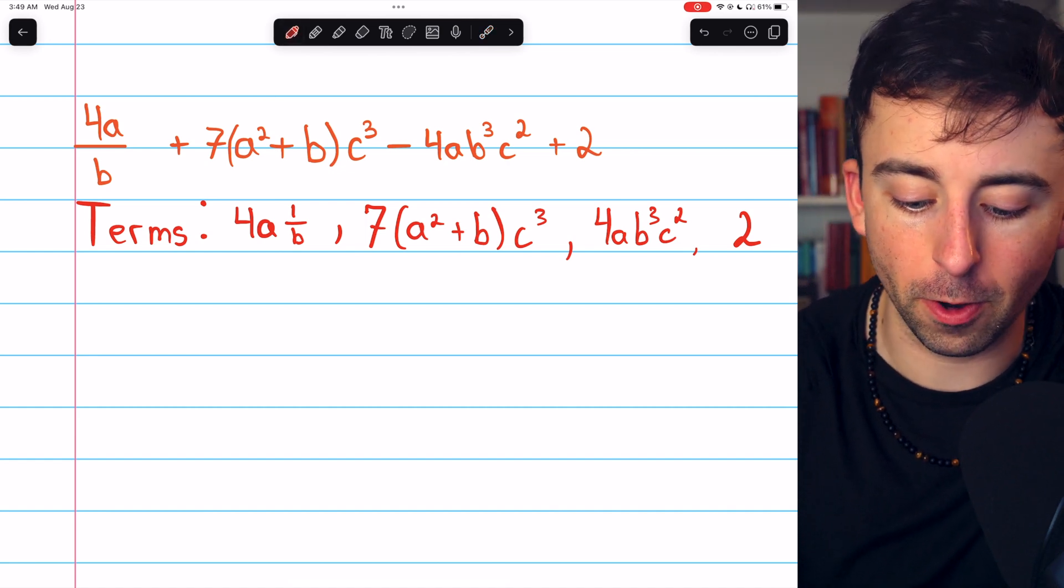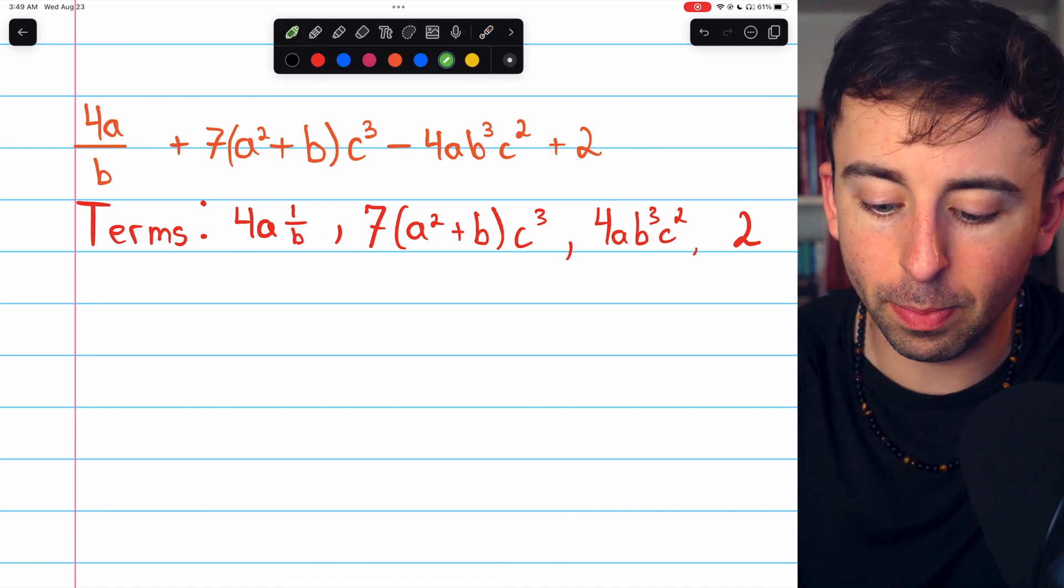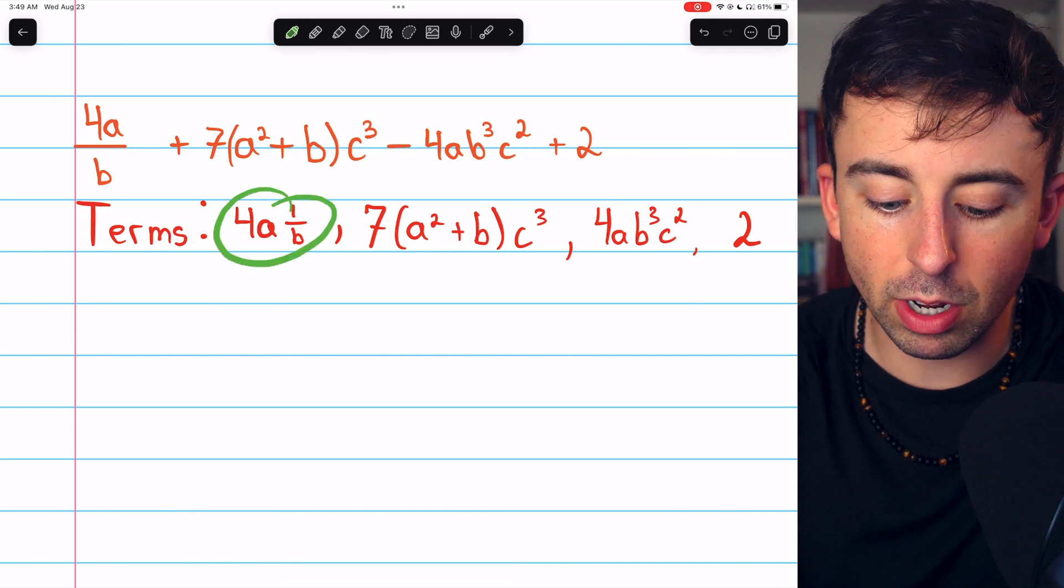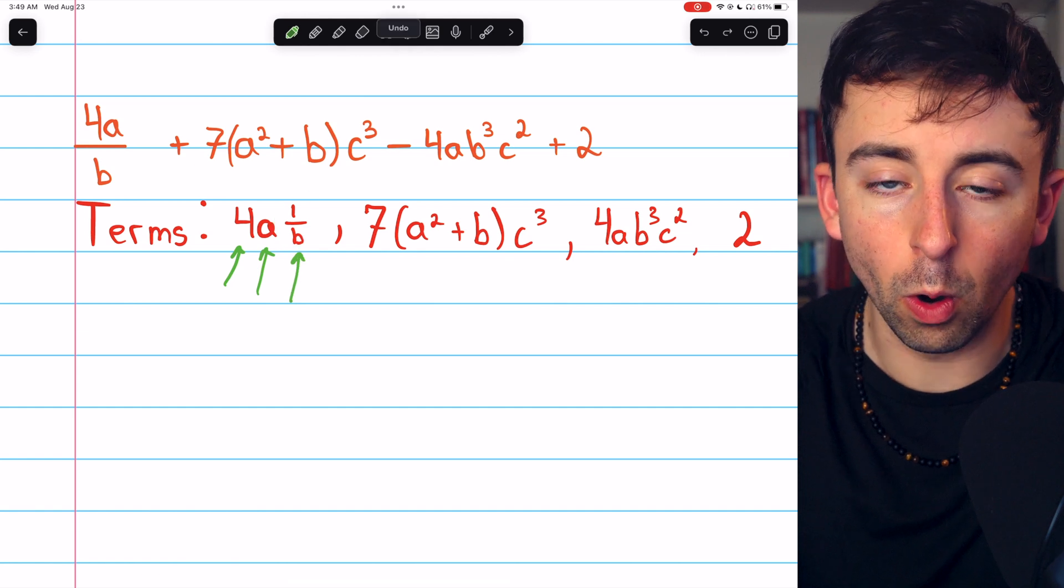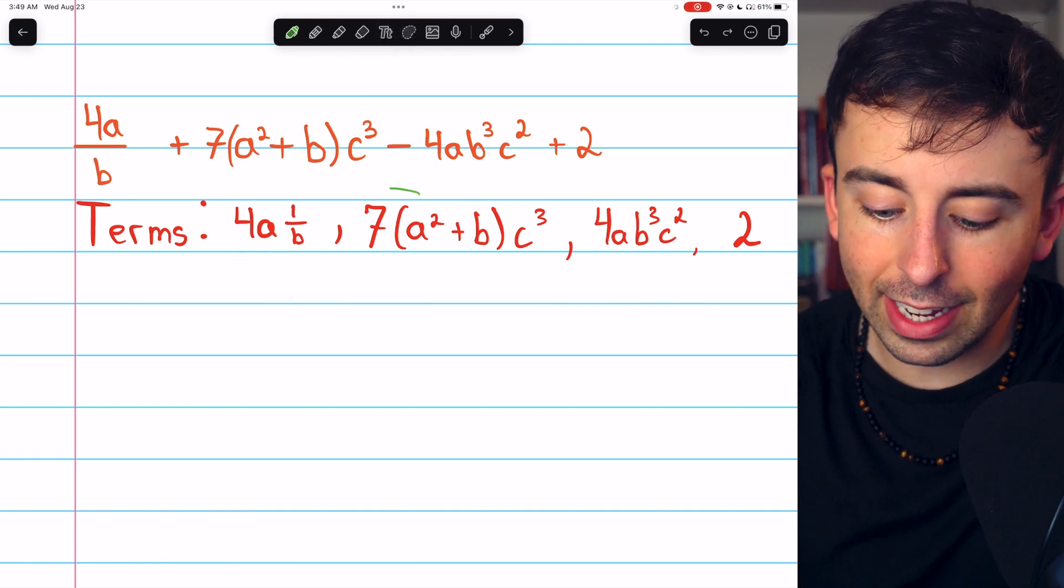We'll talk about some of the factors here. In this first term, for example, we can see that the three factors are 4, the coefficient, a, and 1 over b. In this second term, you may wonder why it itself is one term, even though it has addition in it.